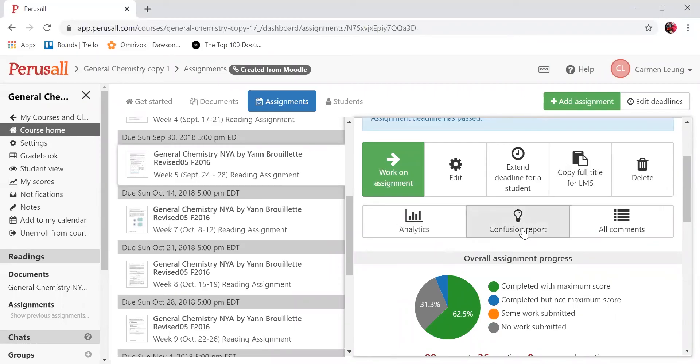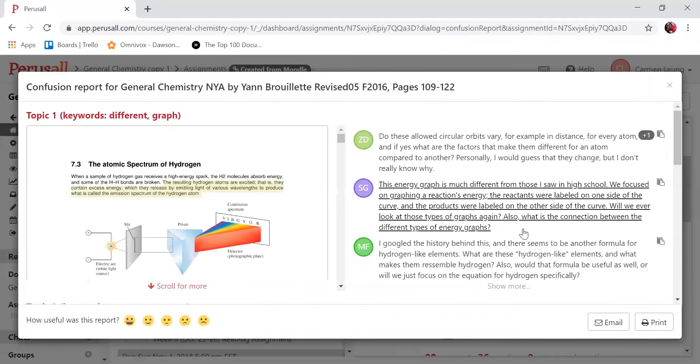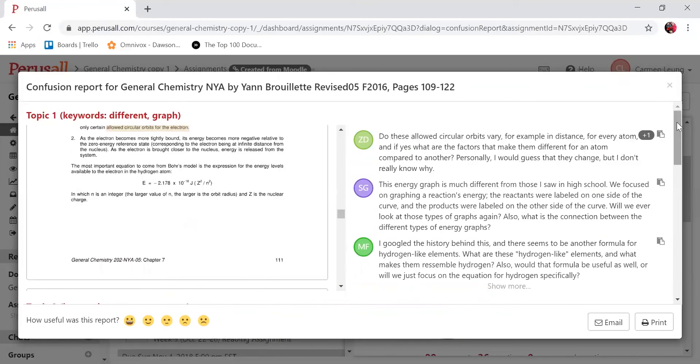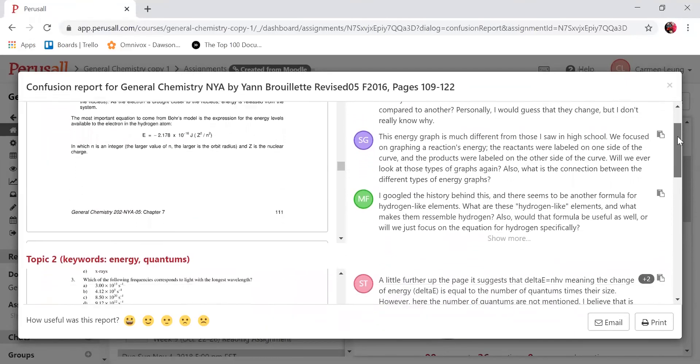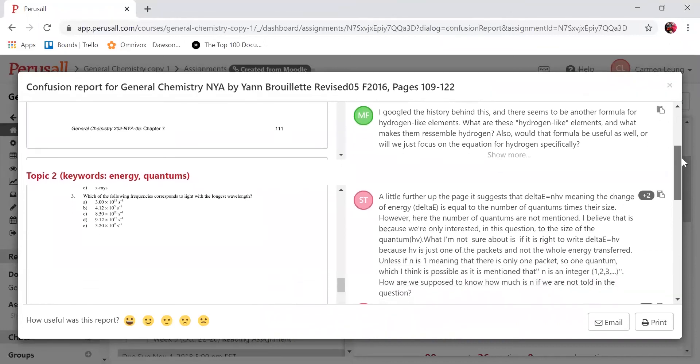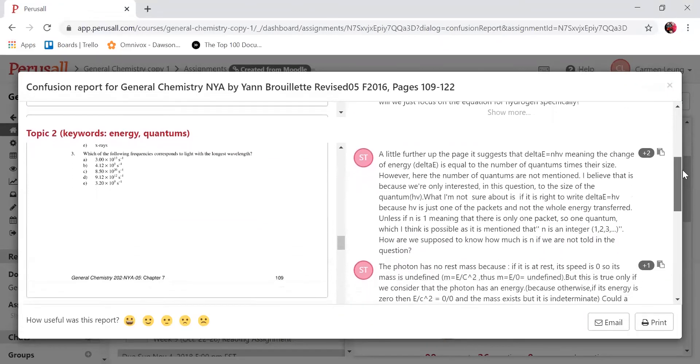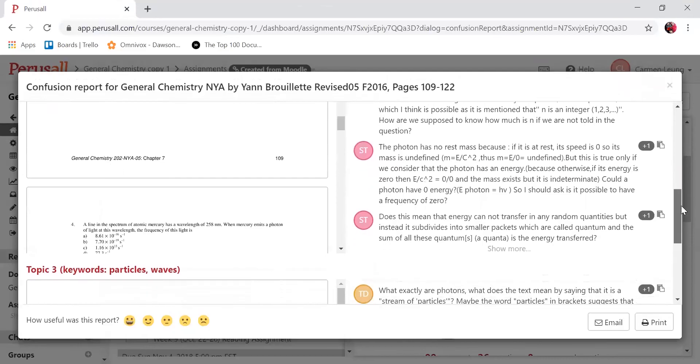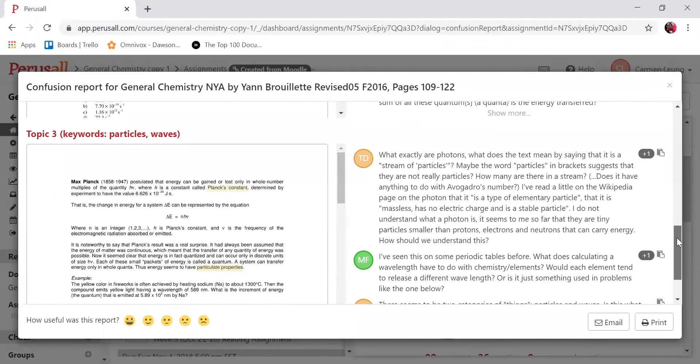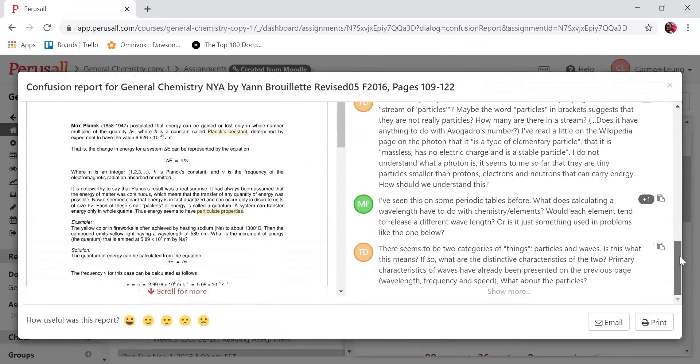You can also get a confusion report. Based on the annotations that were made, Perusall will give you three topics that the students had troubles with or found interesting, as well as the annotations that were added to those conversations. This would be useful in preparing for your lecture—this way you'll know when to slow down and have a more thorough discussion.